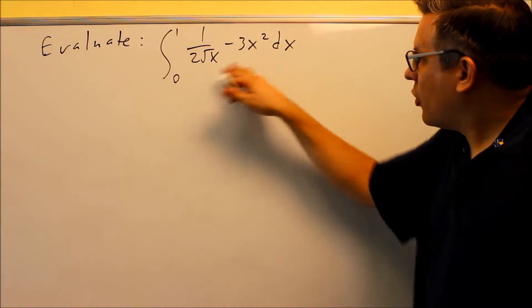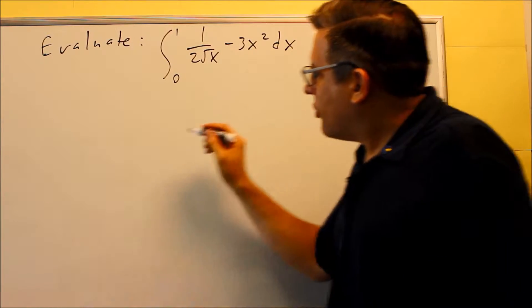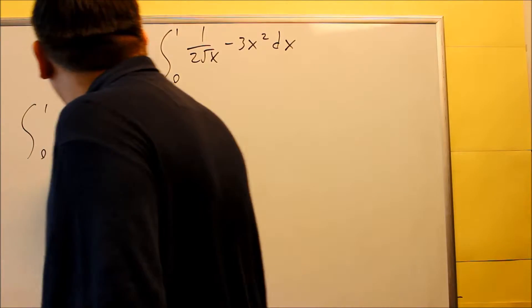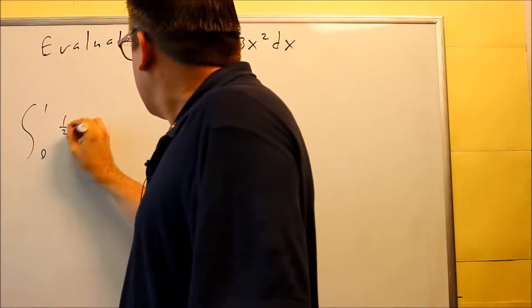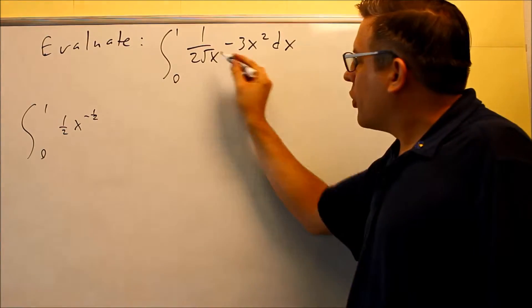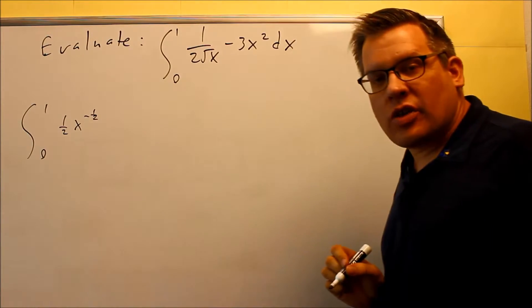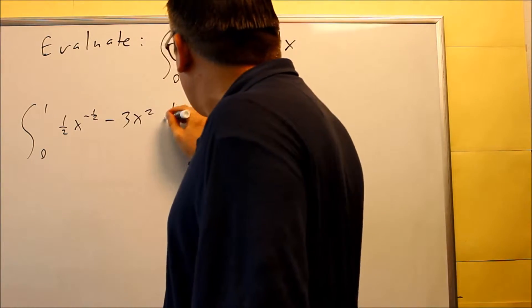For this next one, we want to set it up with exponents so we can use the inverse power rule. Here's how we're going to rewrite that one. We're going to do 1/2 x to the negative 1/2. That's a square root on the bottom, so we can write that as x to the negative 1/2.